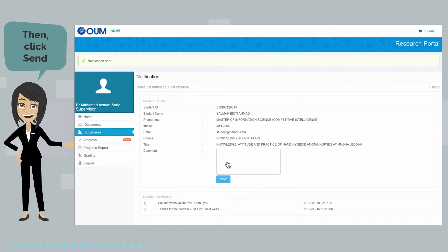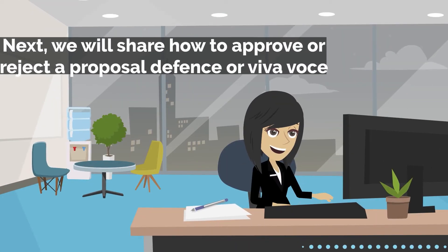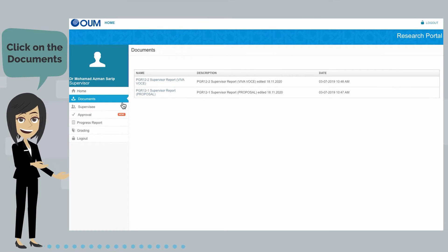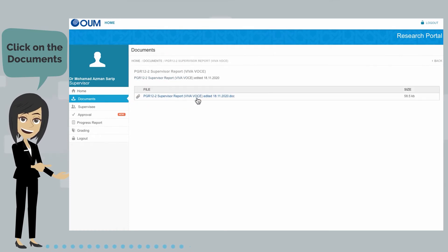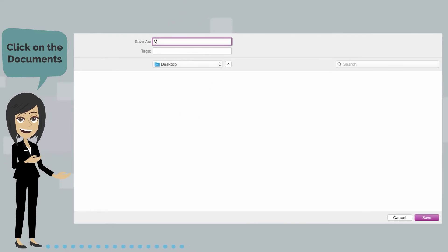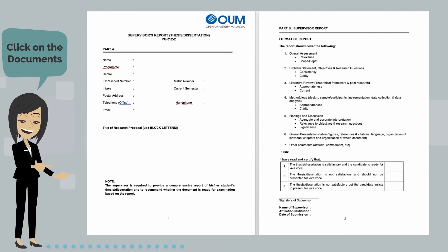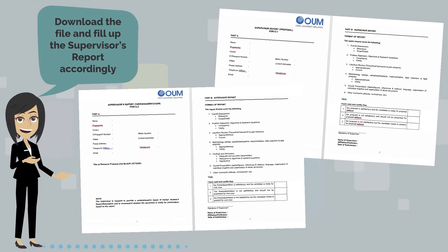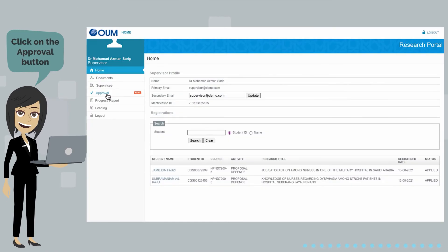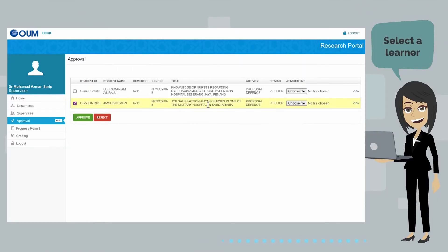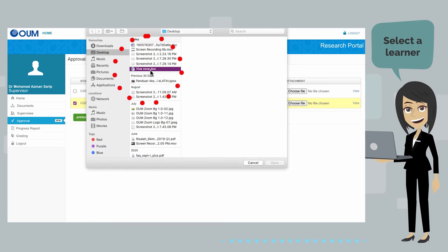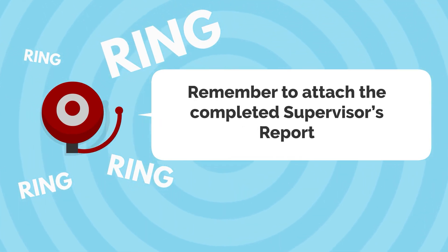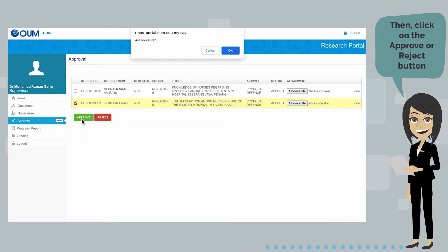Next, we will share how to approve or reject a proposal defense or Viva Voce. Click on the documents to get the supervisor's report templates for you to complete for the proposal or thesis of the learner. Download the file and fill up the supervisor's report accordingly. Next, click on the Approval button and select a learner. Remember to attach the completed supervisor's report, then click on the Approval or Reject button.